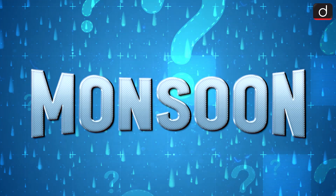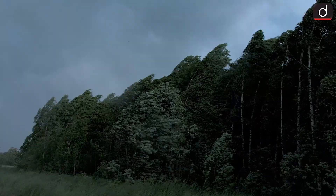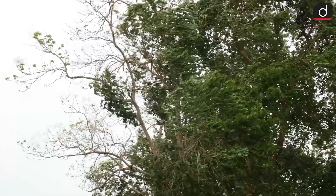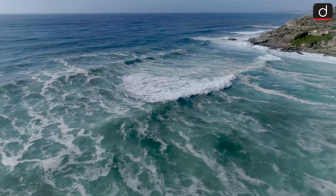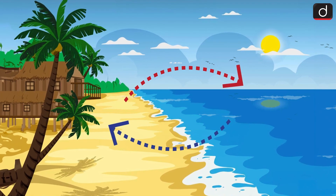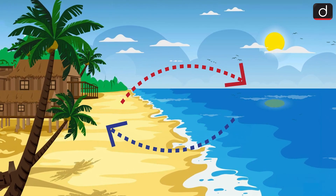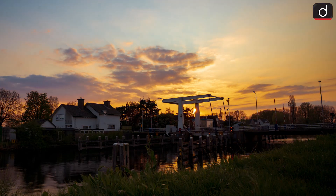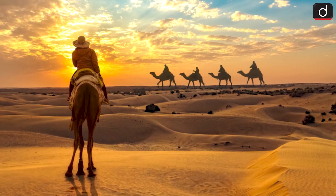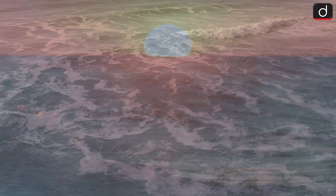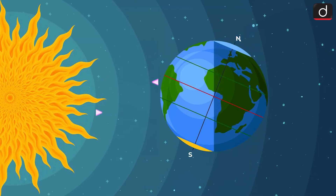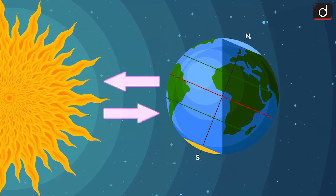How does the monsoon originate? As the seasons change, so does the direction of the wind, bringing moisture-laden air. But why does the wind direction change? The difference in temperature between the sea and the land causes this shift. The land heats up faster than the sea, and the sea takes longer to warm up. This temperature difference is due to the specific heat capacities of land and water. As the land heats up significantly and the sea remains relatively cooler, pressure differences emerge in the surface and upper atmosphere. In simple terms, heat and pressure are inversely related.